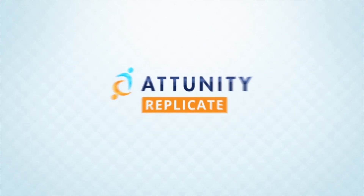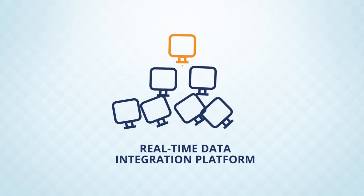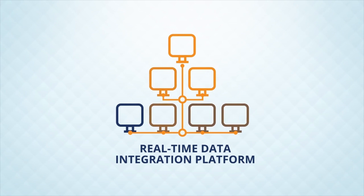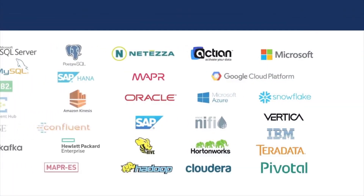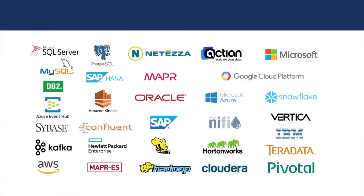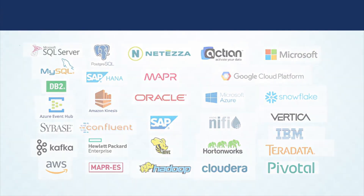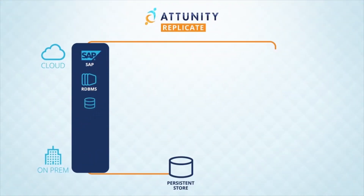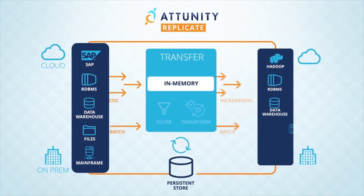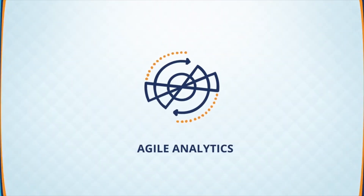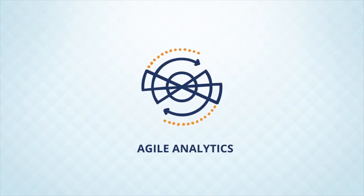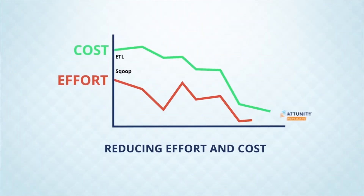Attunity provides an automated, universal, and real-time data integration platform for all major endpoints, including data lake, streaming, and cloud architectures. You can deliver more data to the business at high scale, ready for agile analytics, while reducing effort and cost.